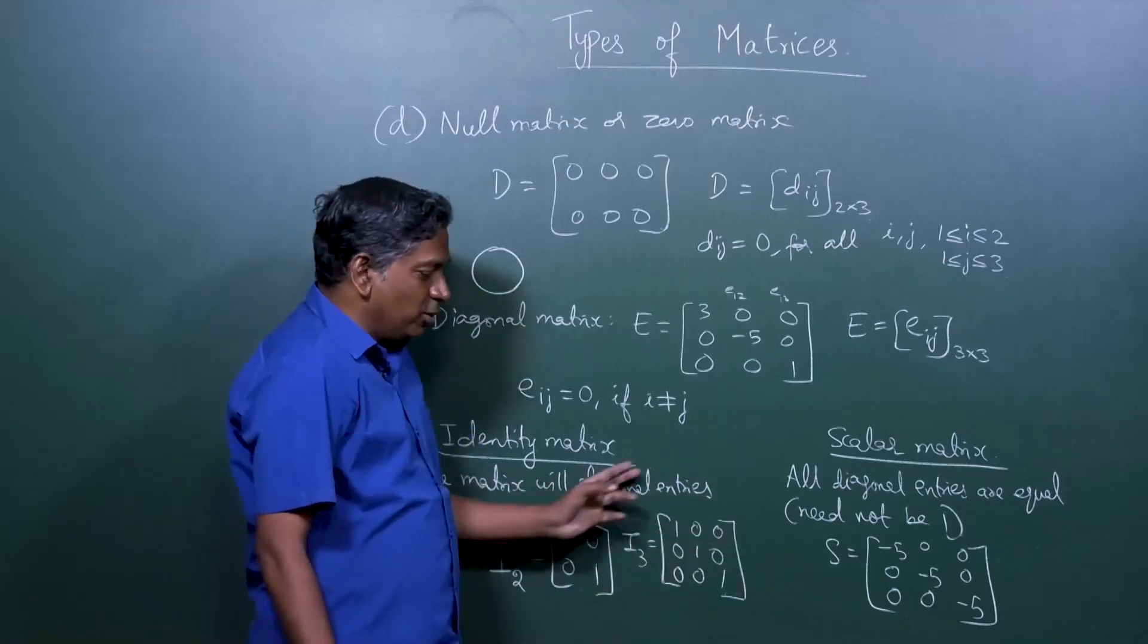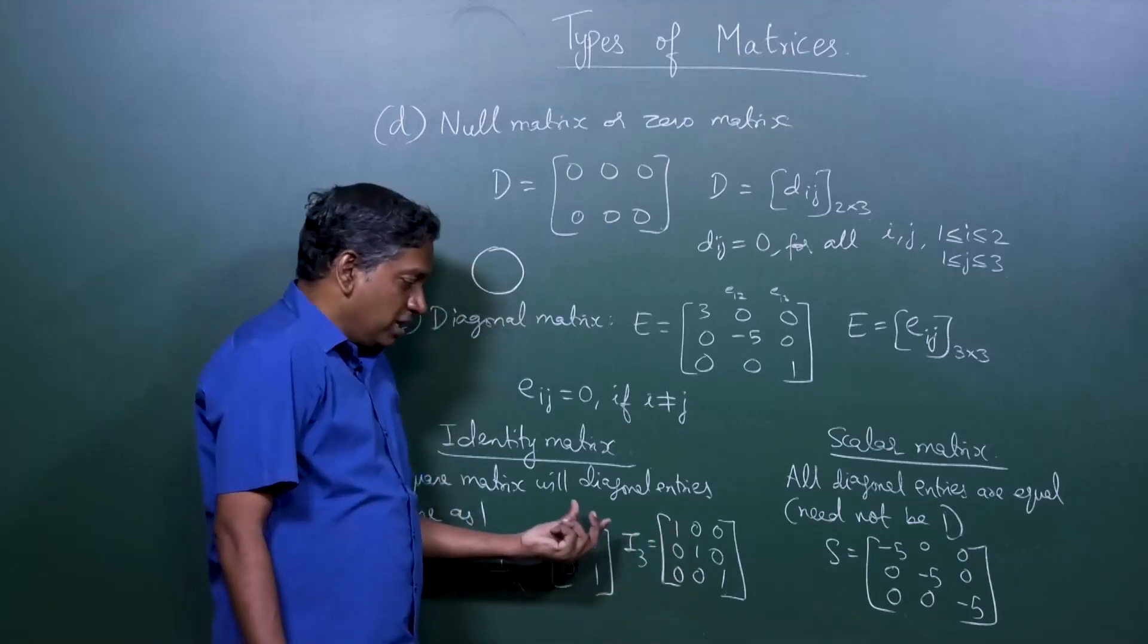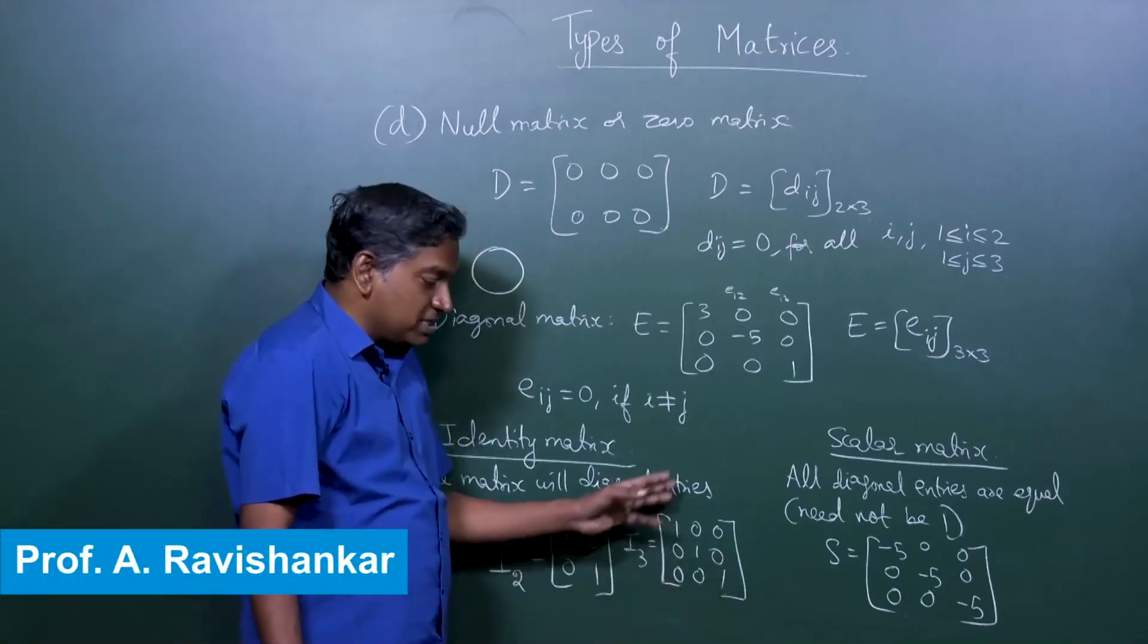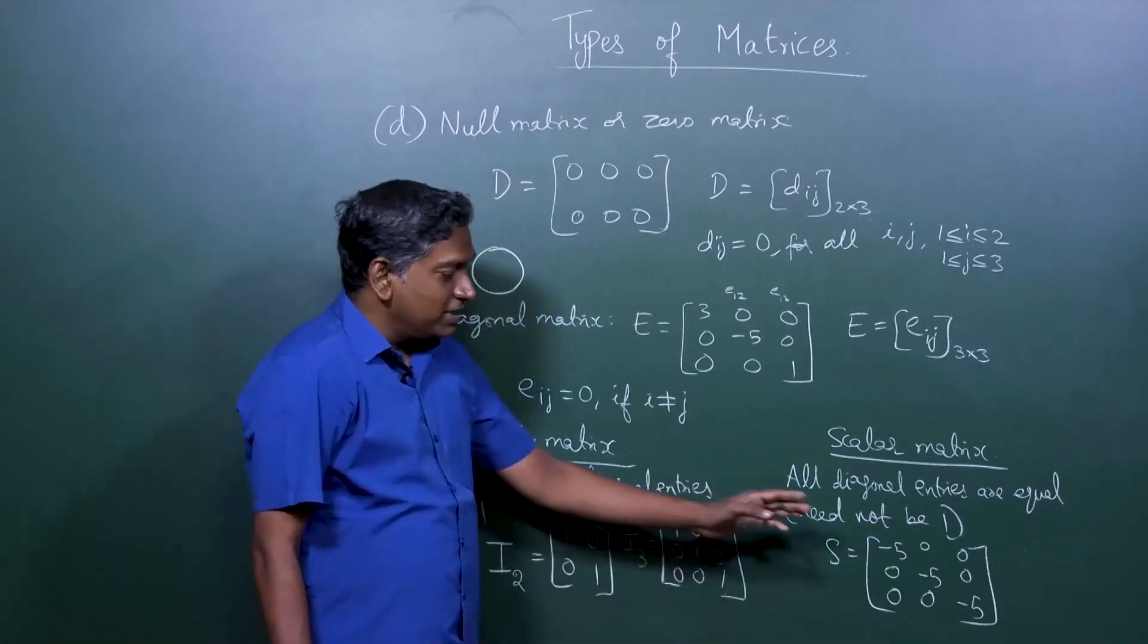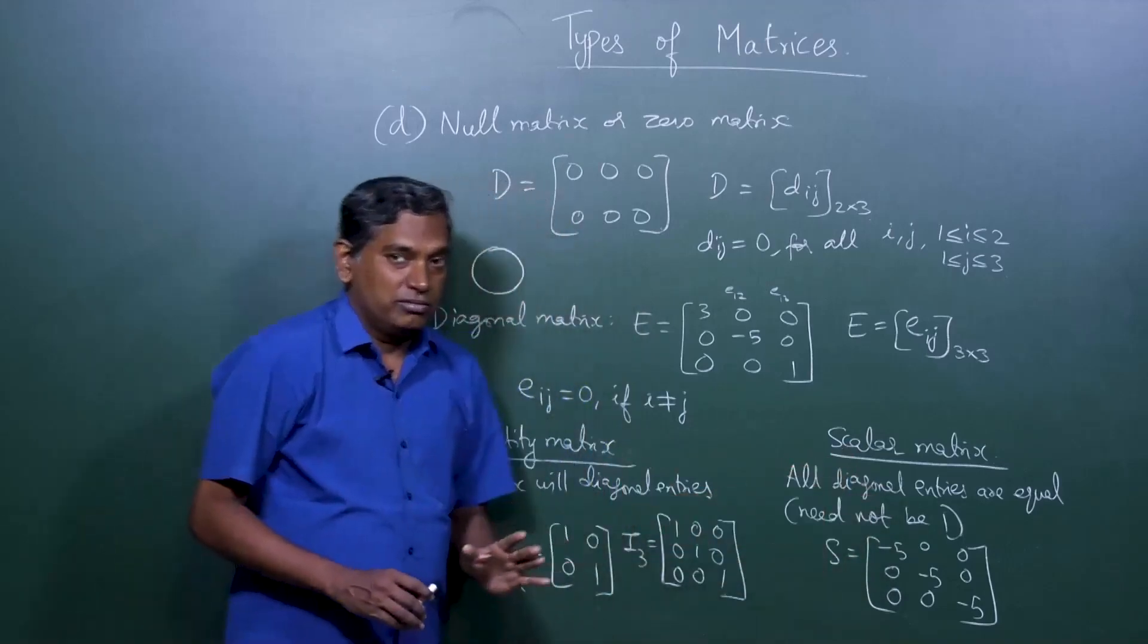So identity and scalar are both diagonal matrices. Identity is something that we will use again and again. And you can see that i2, i3, etc. denote the square matrices of two by two or three by three order, which are identity matrices. And scalar, it's a diagonal matrix where the entries are all equal, but they can be any number.